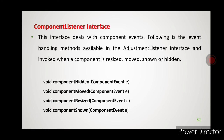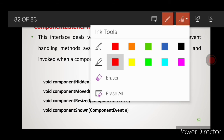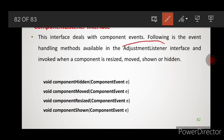Next is the component listener interface. This interface deals with component events and invokes four methods when a component is resized, moved, shown, or hidden. The component hidden method is called when the component becomes hidden, component moved when it is moved, component resized when it is resized, and component shown when it is shown. Note: there is a labeling correction — it is the component listener, not the adjustment listener.